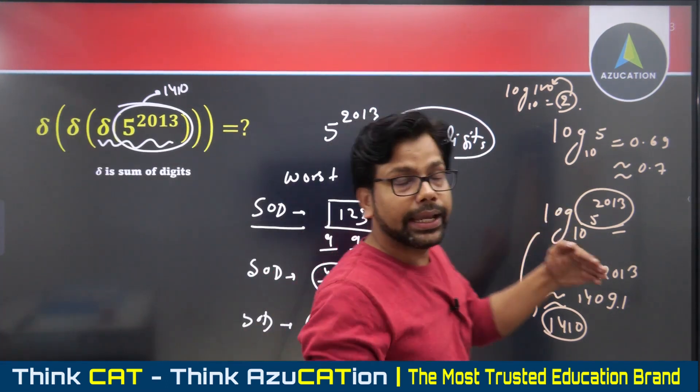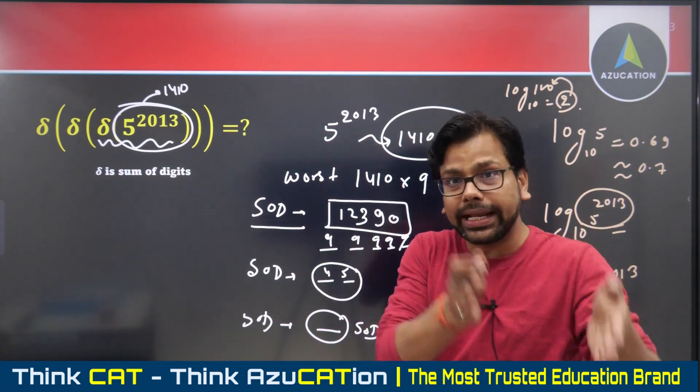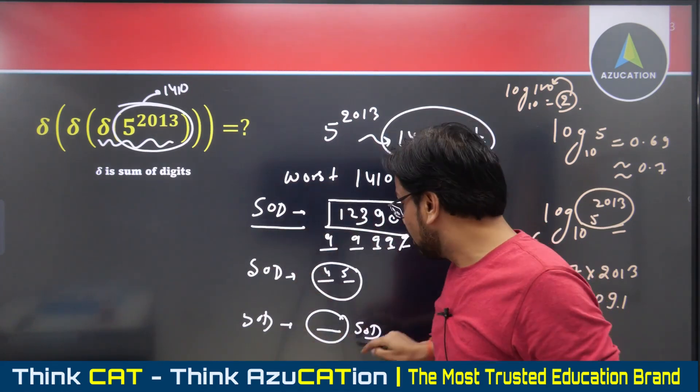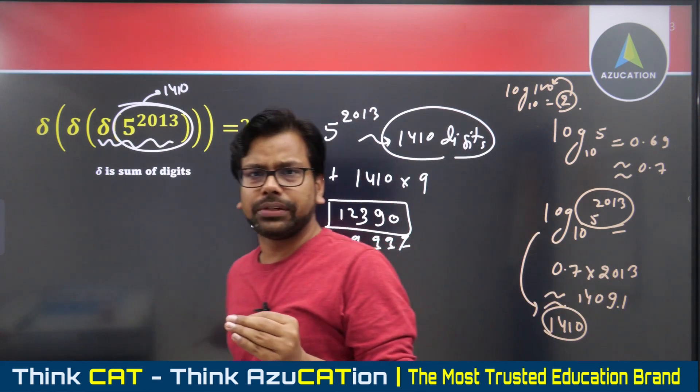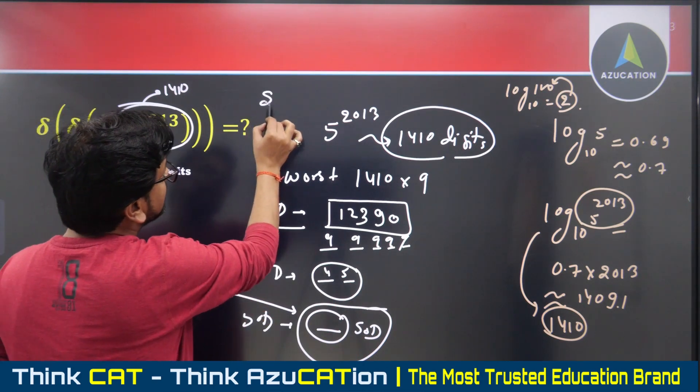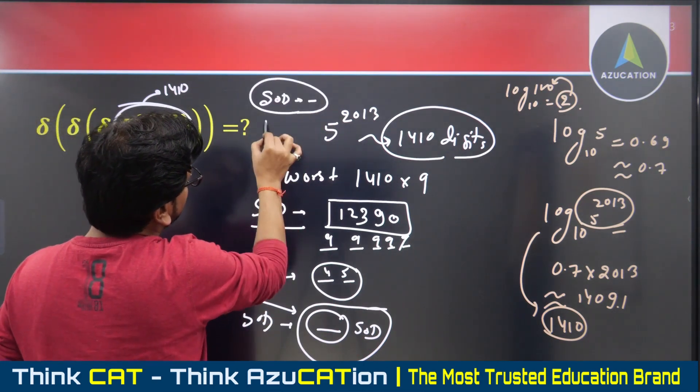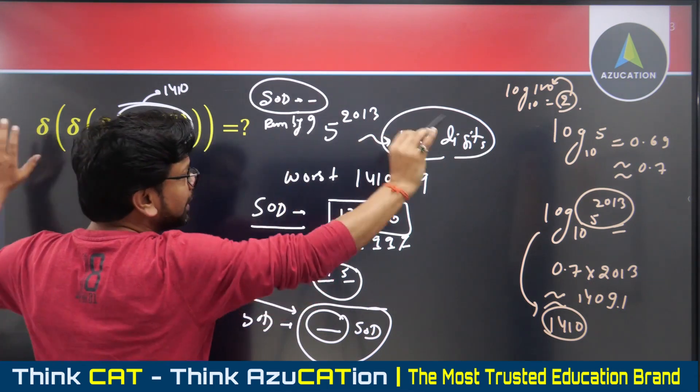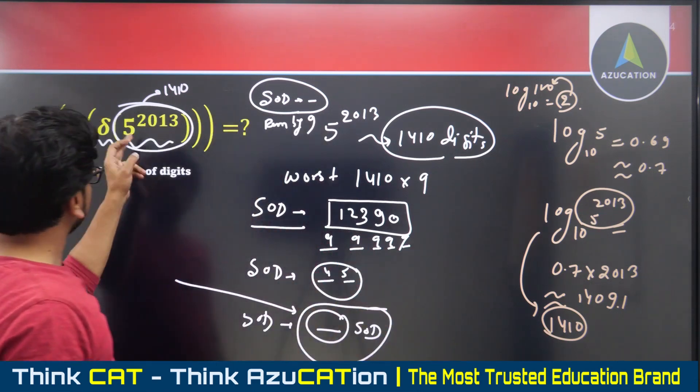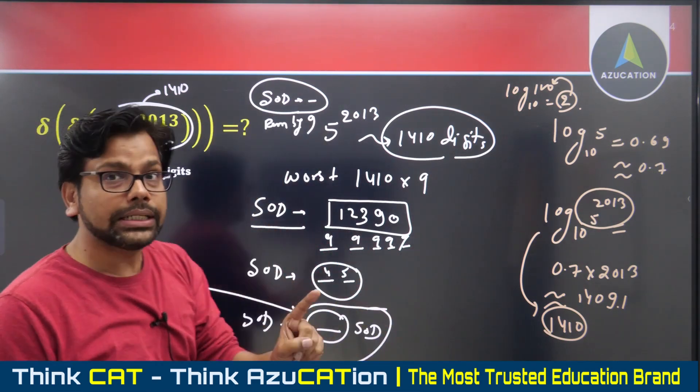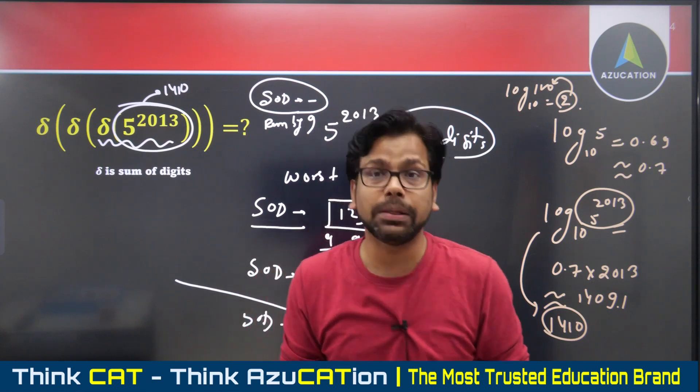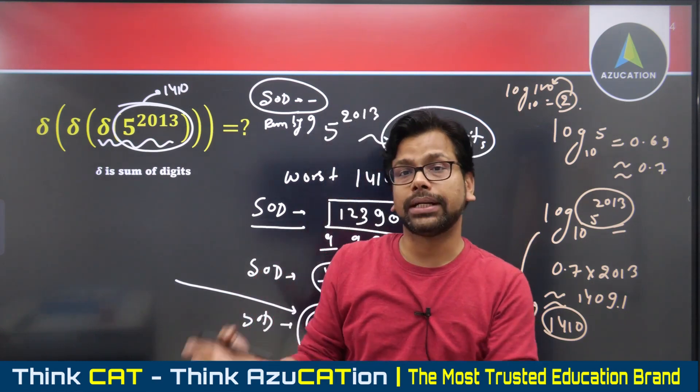So the process I showed you: if you find summation of digits, then summation of digits, then summation of digits for this number, it leads to a single-digit number. When summation of digits limits to a single-digit number, it means we are finding remainder by nine. Because the remainder rule for nine is that sum of digits is the remainder by nine.